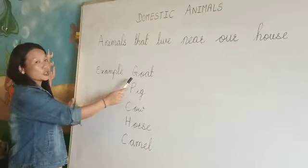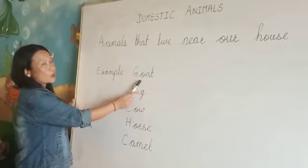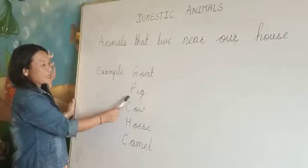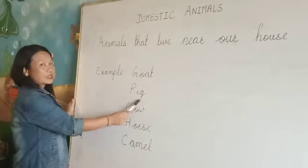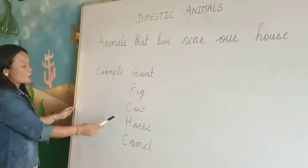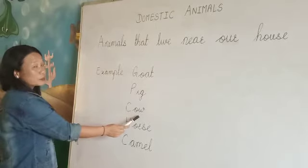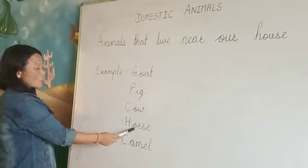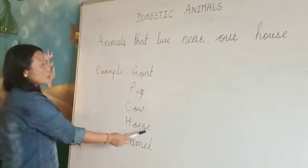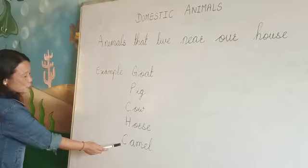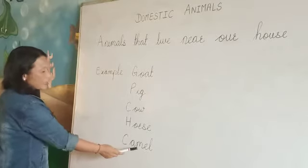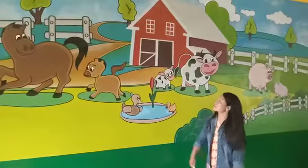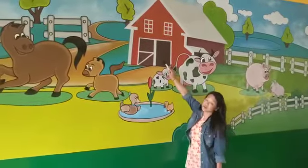Examples: Goat — G-O-A-T, Goat. Pig — P-I-G, Pig. Cow — C-O-W, Cow. Horse — H-O-R-S-E, Horse. Camel — C-A-M-E-L, Camel. Suppose this is your house.